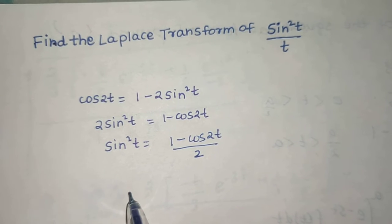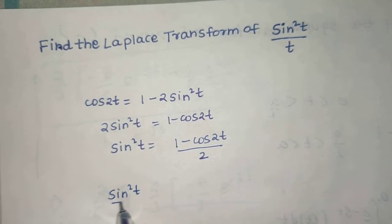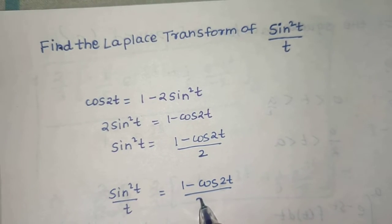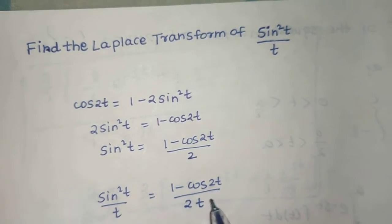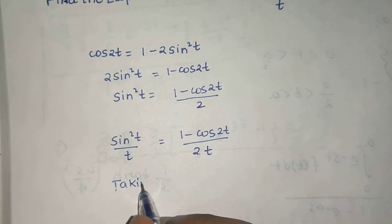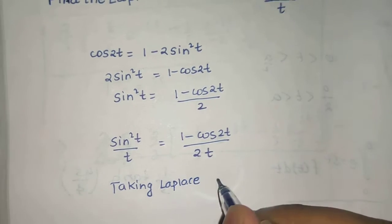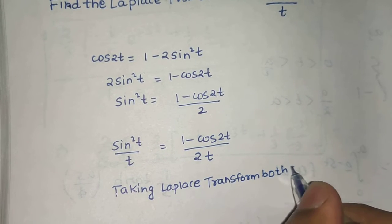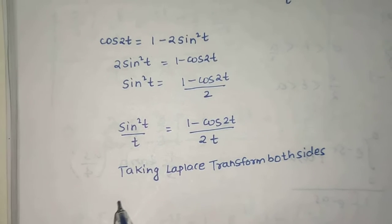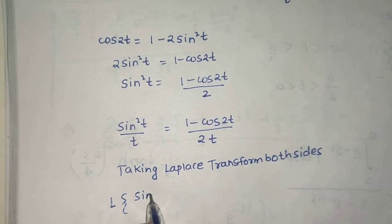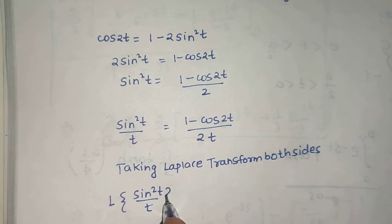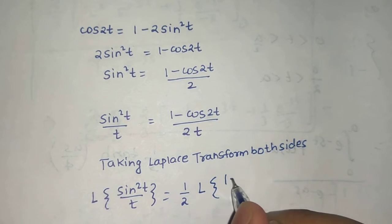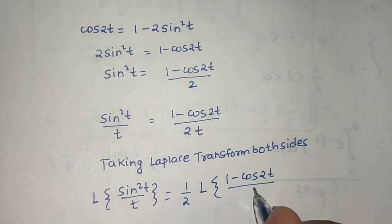So this can be written as sine squared t divided by t, which is (1 minus cos 2t) divided by 2, with a t in the denominator. Taking Laplace transform of both sides, we get Laplace of sine squared t by t is equal to one half times Laplace of (1 minus cos 2t) divided by t.